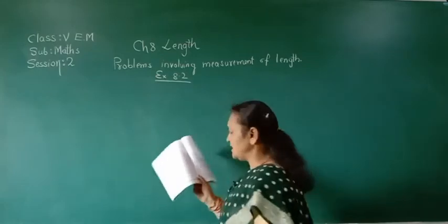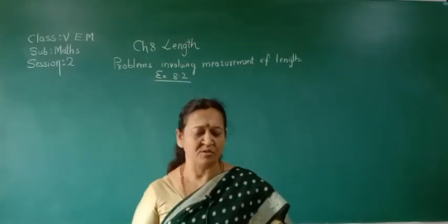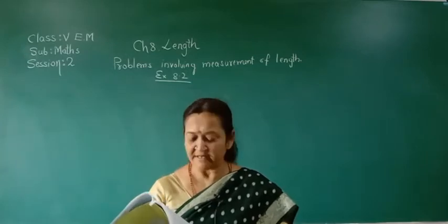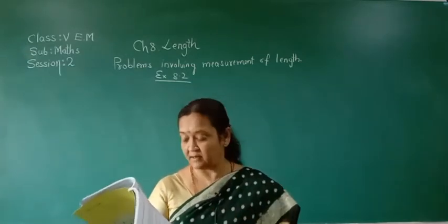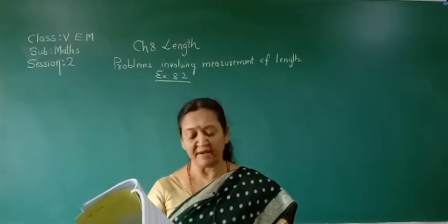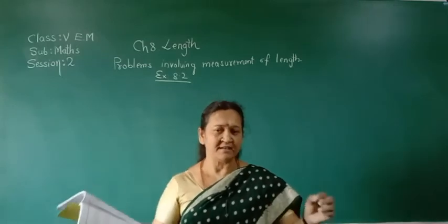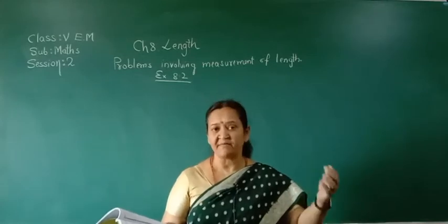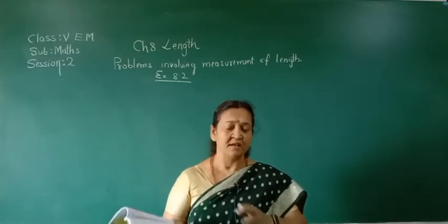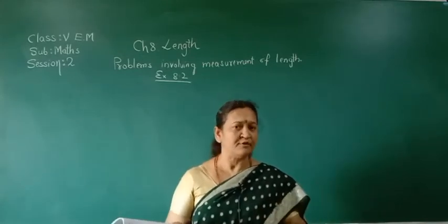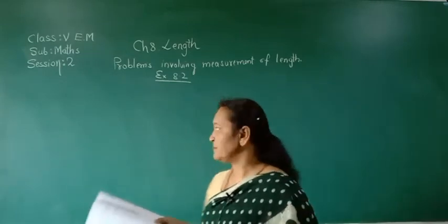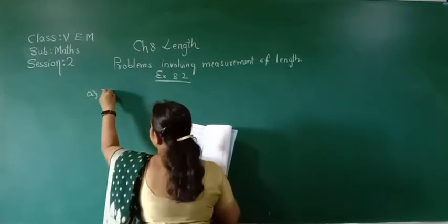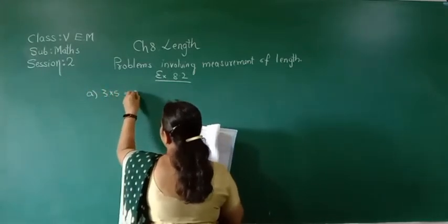The first main question is to answer orally. These are oral questions. First one: the length of a wire is 3 meters. What is the total length of 5 such wires? One wire is 3 meters, so for 5 wires we should multiply. 3 times 5 is 15 meters.